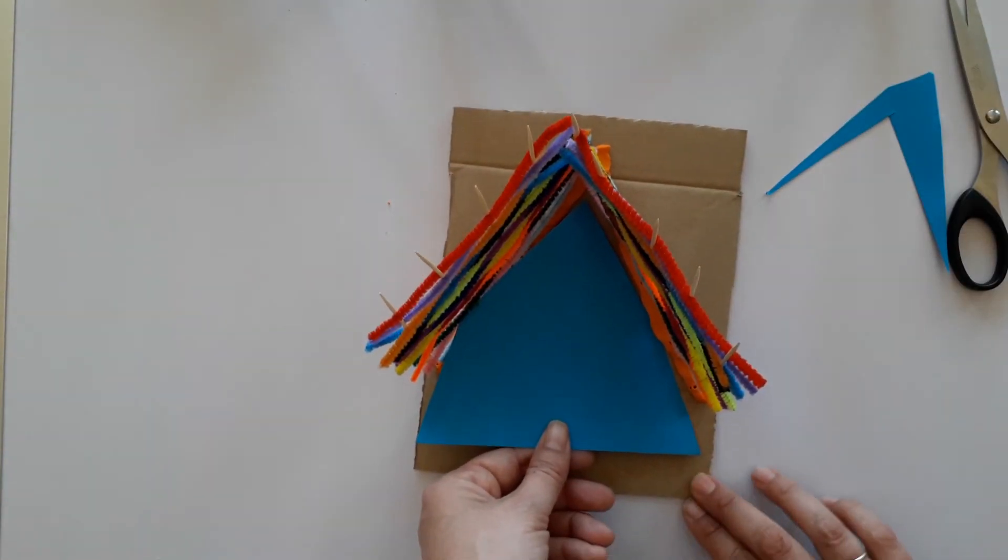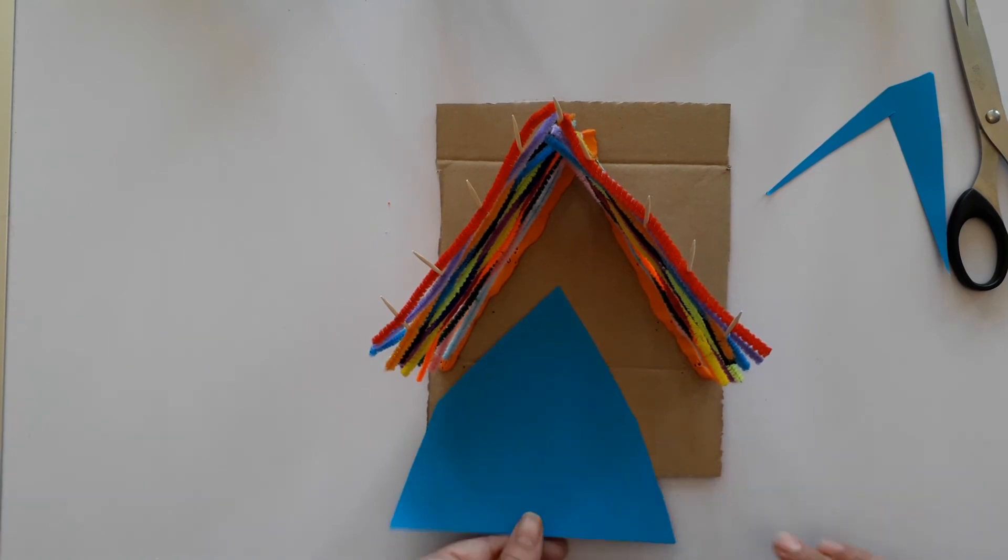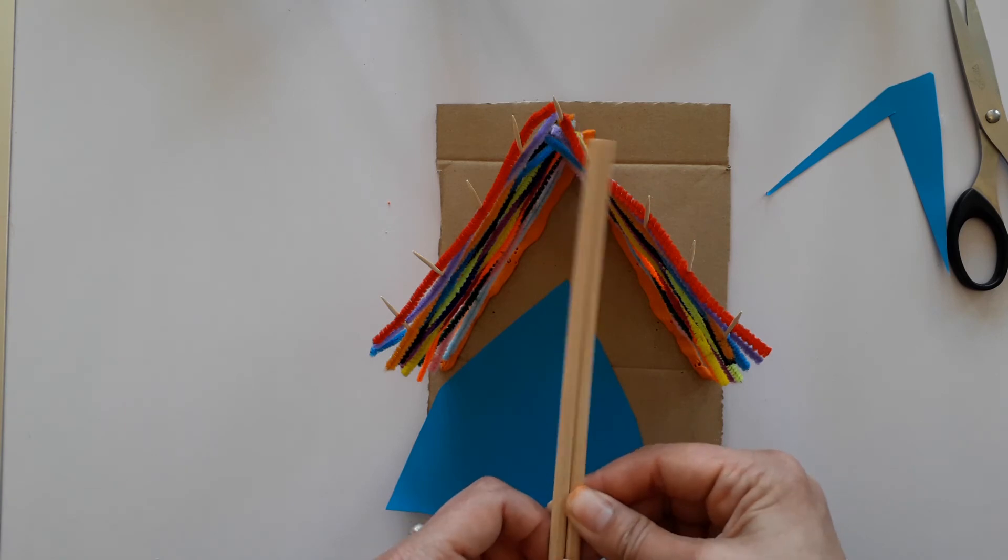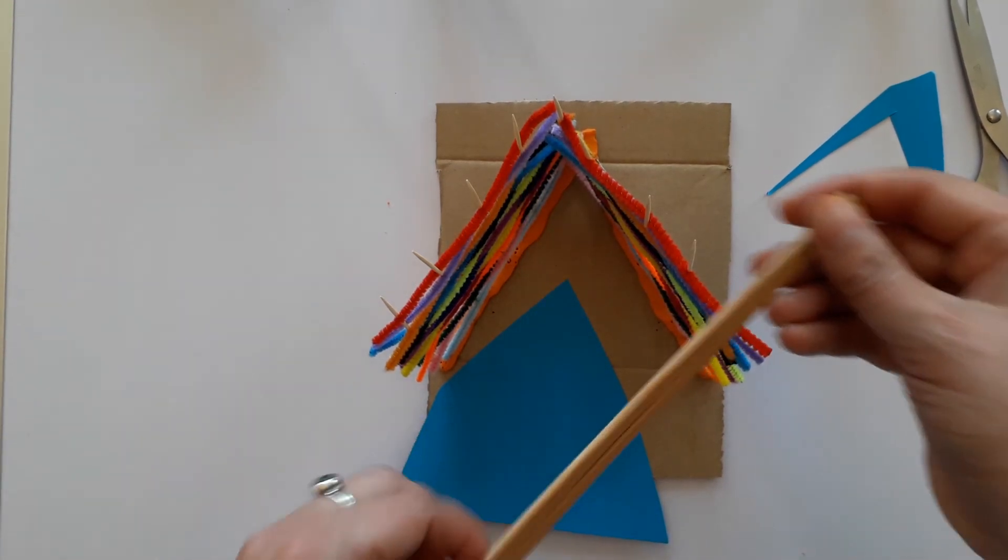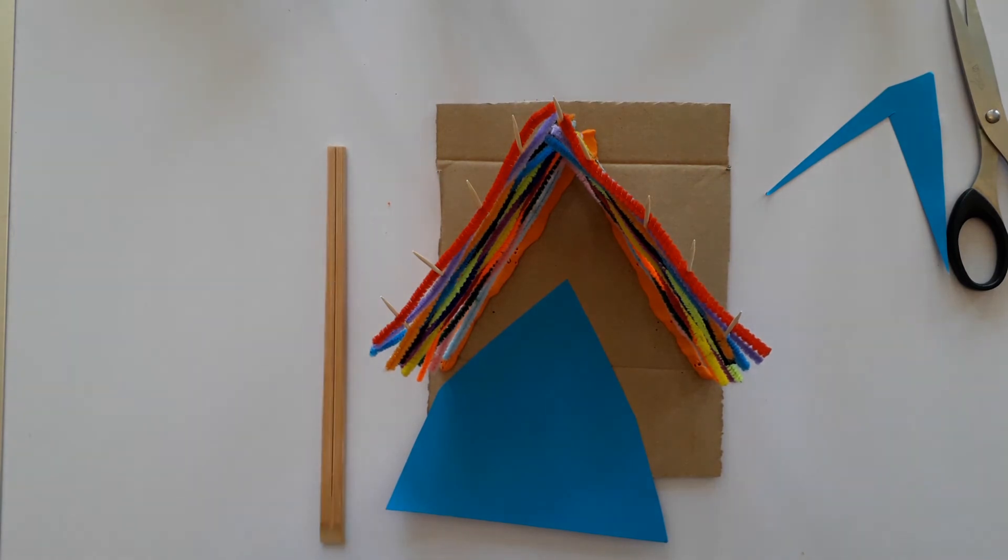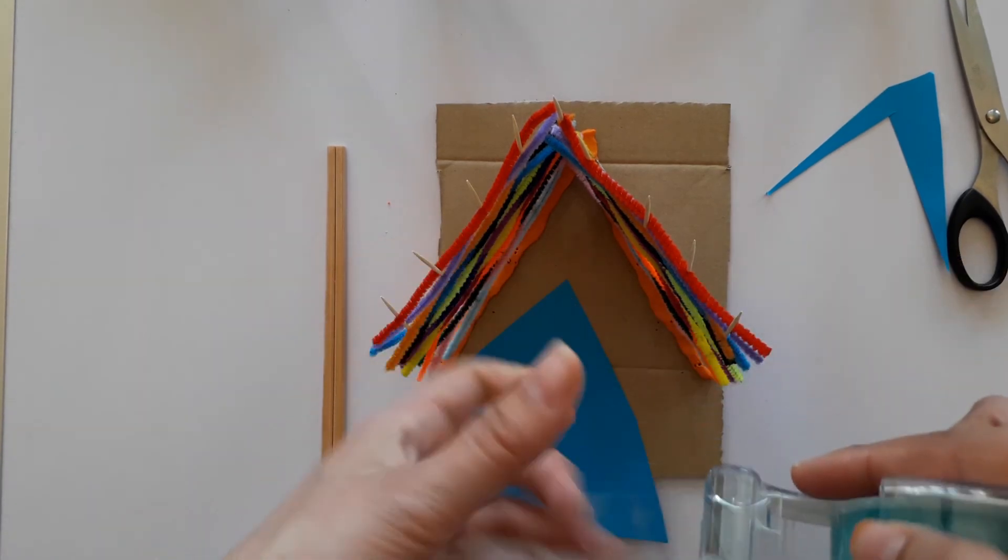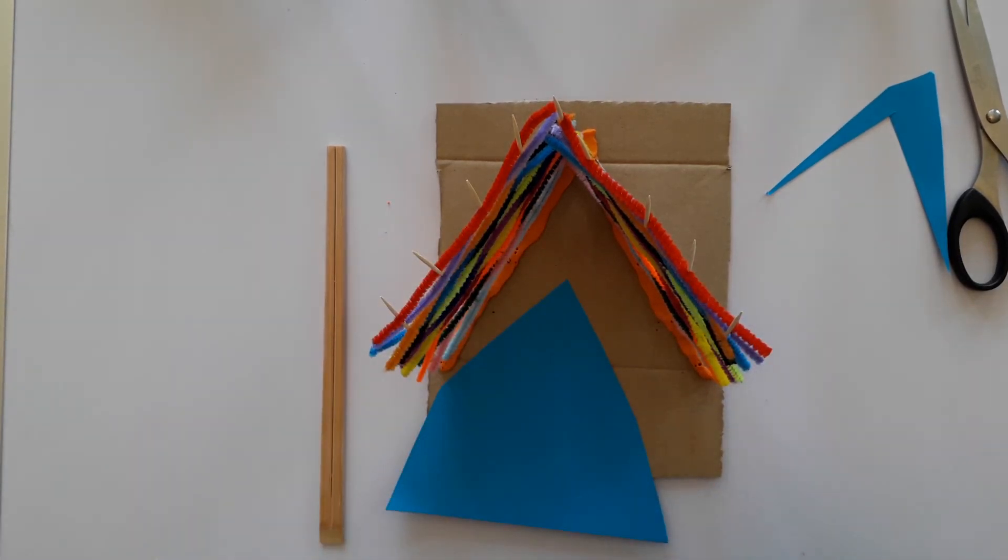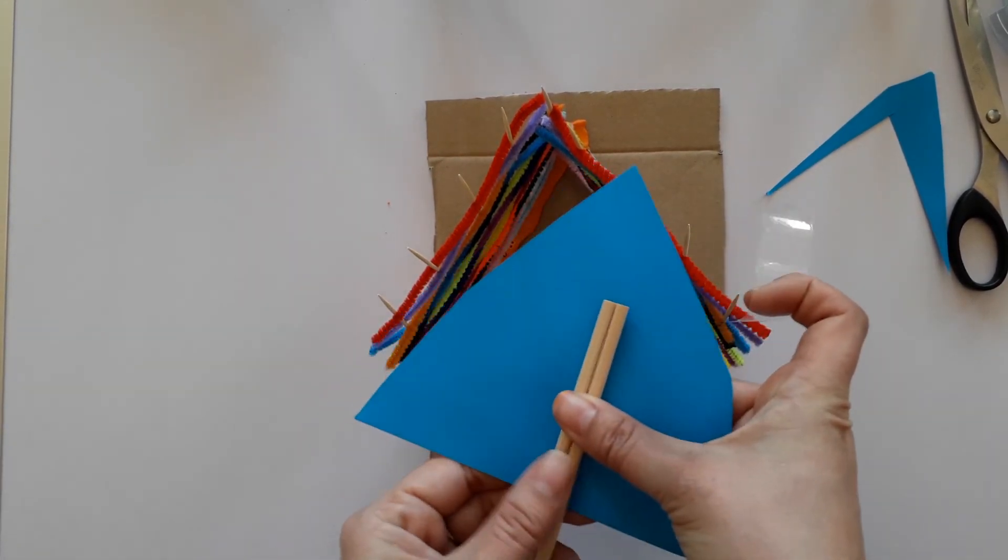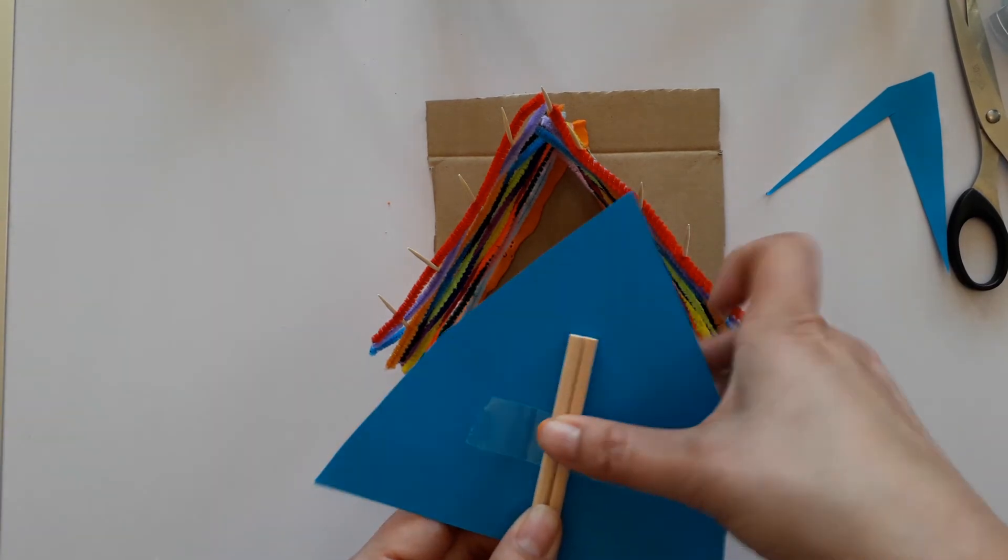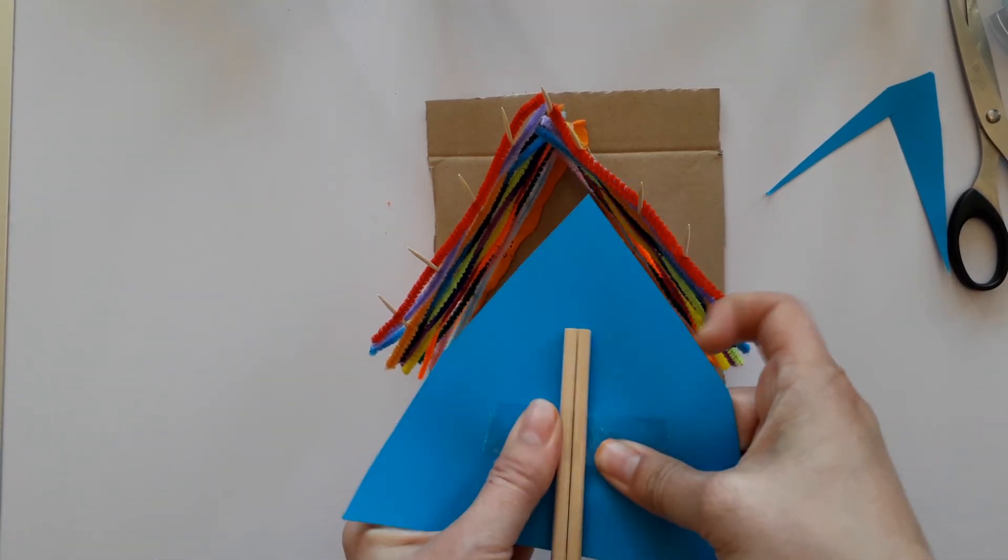Now if you want your tide to move you may have some chopsticks or maybe some bamboo skewers or something like that. So you just take those, you take some tape, and just like this you tape your tide to your chopsticks.